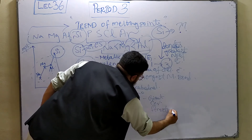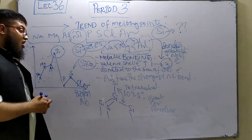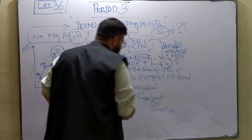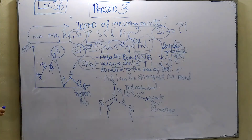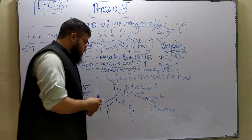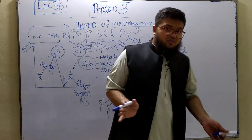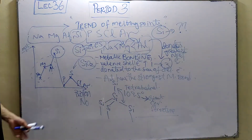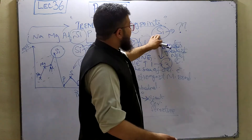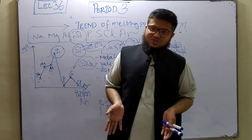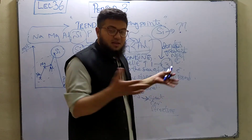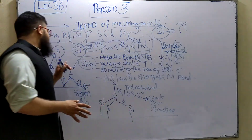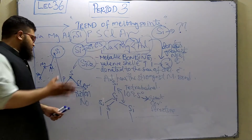Since silicon has a giant covalent structure, a great many covalent bonds need to be broken before it can melt. Therefore, it requires the greatest amount of energy to break all the covalent bonds present in silicon in order to melt it. That's why silicon has the highest melting point — because of its giant covalent structure, the highest amount of energy is needed to overcome those bonds compared to all other Period 3 elements.